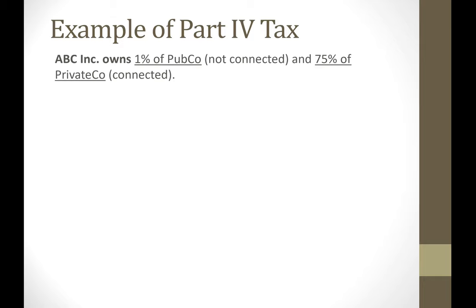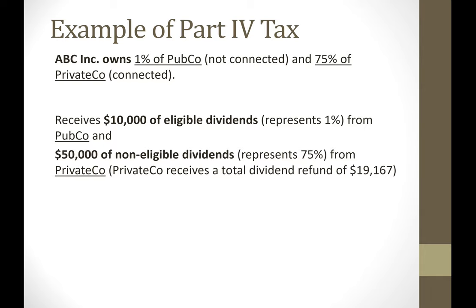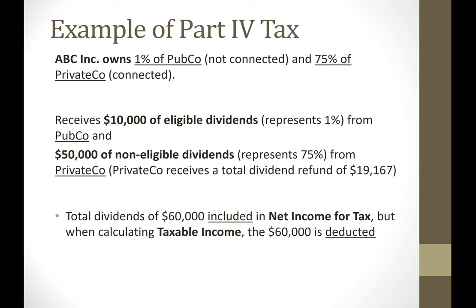Let's look at an example of Part 4 tax. ABC owns 1% of PubCo — not connected — and 75% of PrivateCo — connected. ABC receives $10,000 of eligible dividends from PubCo, representing its 1% ownership claim, and $50,000 of non-eligible dividends from PrivateCo, representing its 75% share of dividends PrivateCo paid. In doing so, PrivateCo receives a total dividend refund of $19,167. The dividends are included in ABC's net income but deducted when calculating taxable income, so there is no Part 1 tax on the $60,000 dividend income.